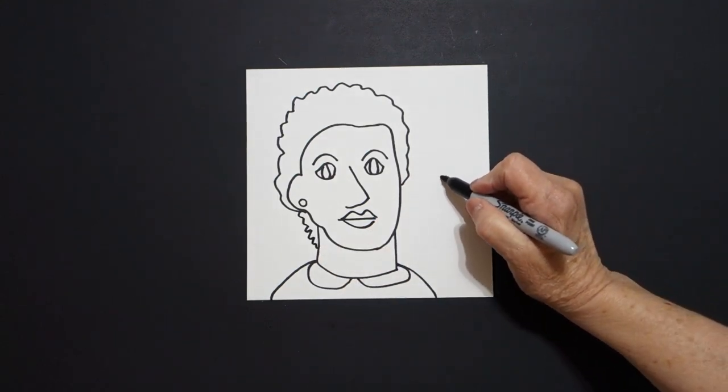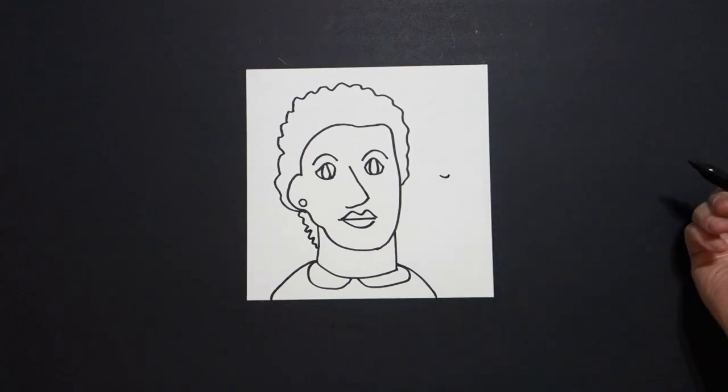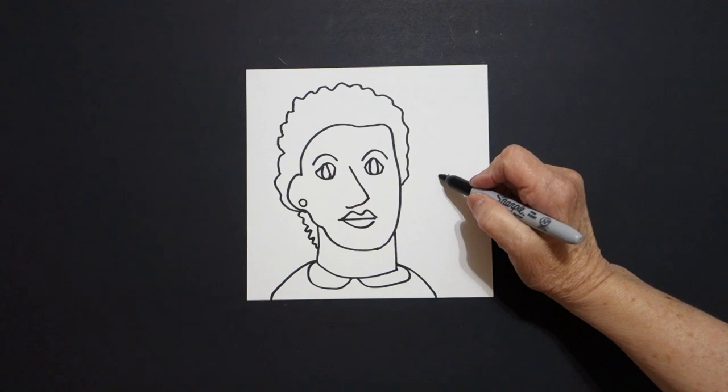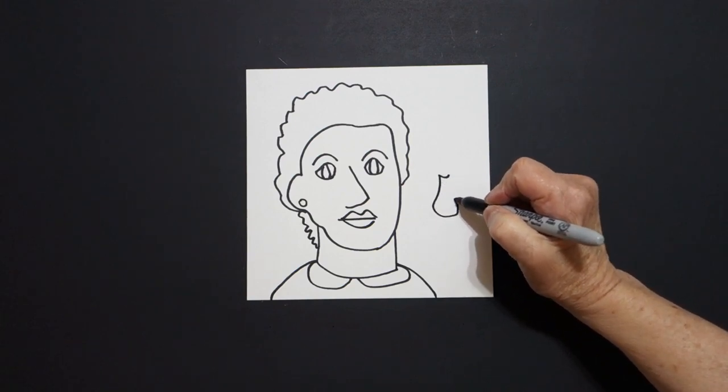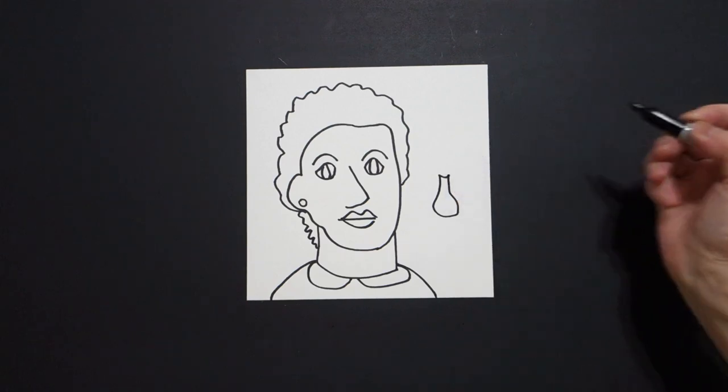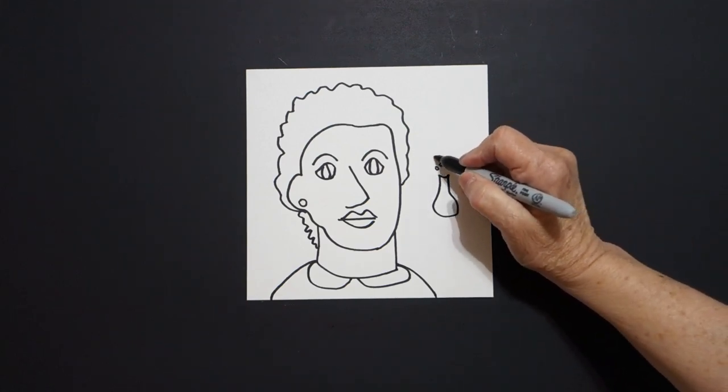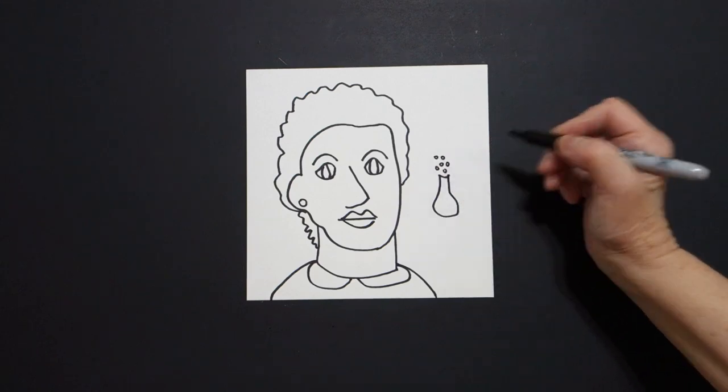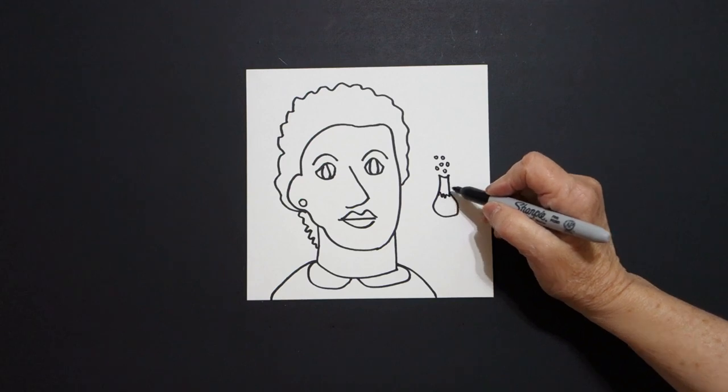Now, over here on this side, I'm going to put a dot, and I'm going to draw a little curve line. Come back to the dot, straight line, curve line, curve line up, straight line, connect. And I'm going to put a dot, and I'm going to put little baby circles above, and a wavy, wavy line inside.